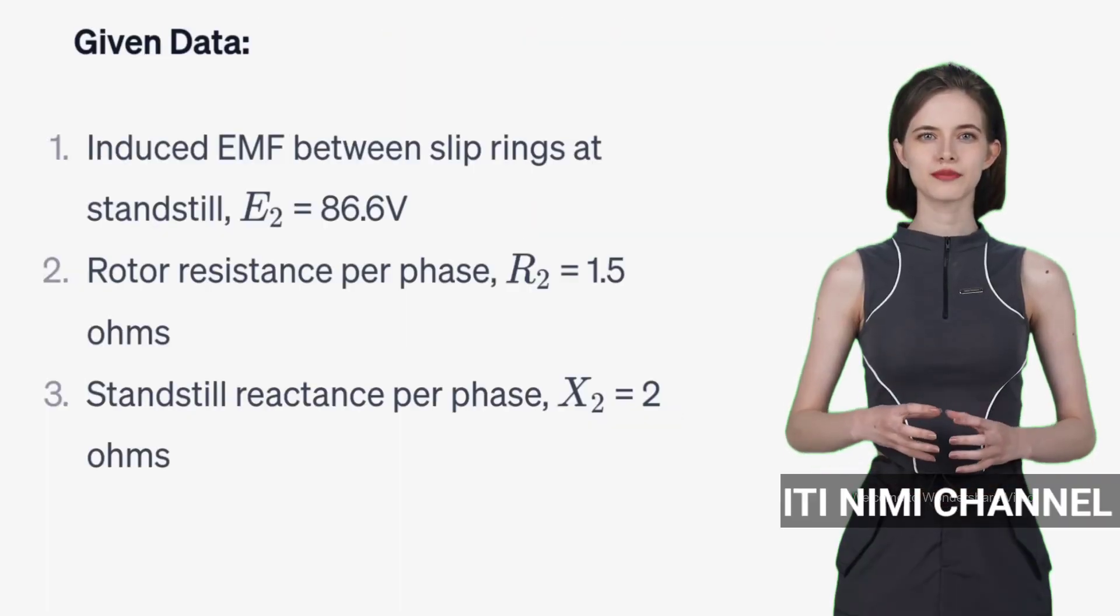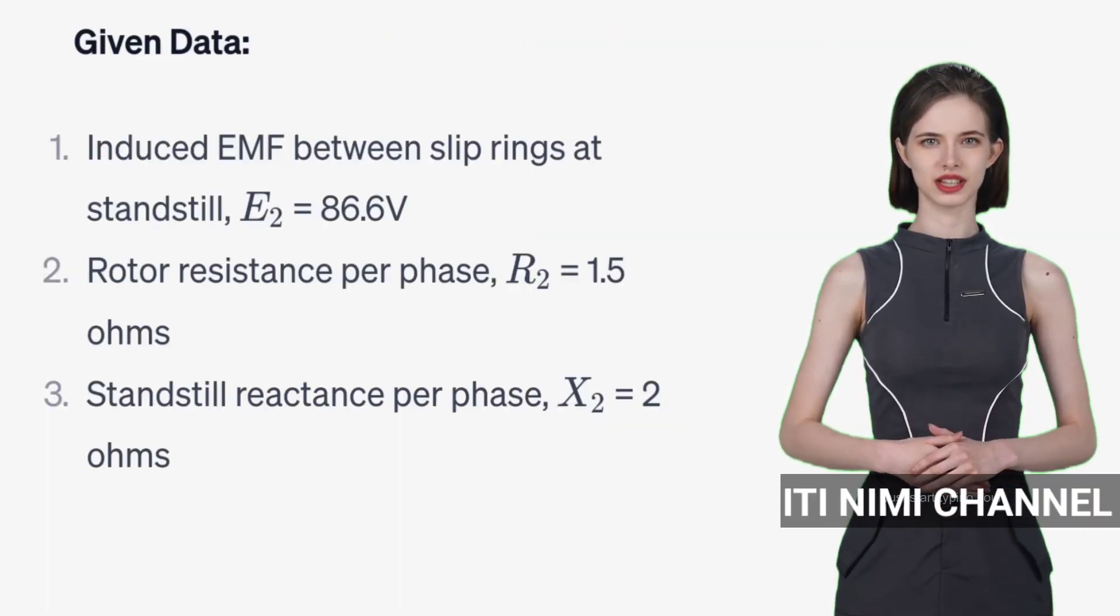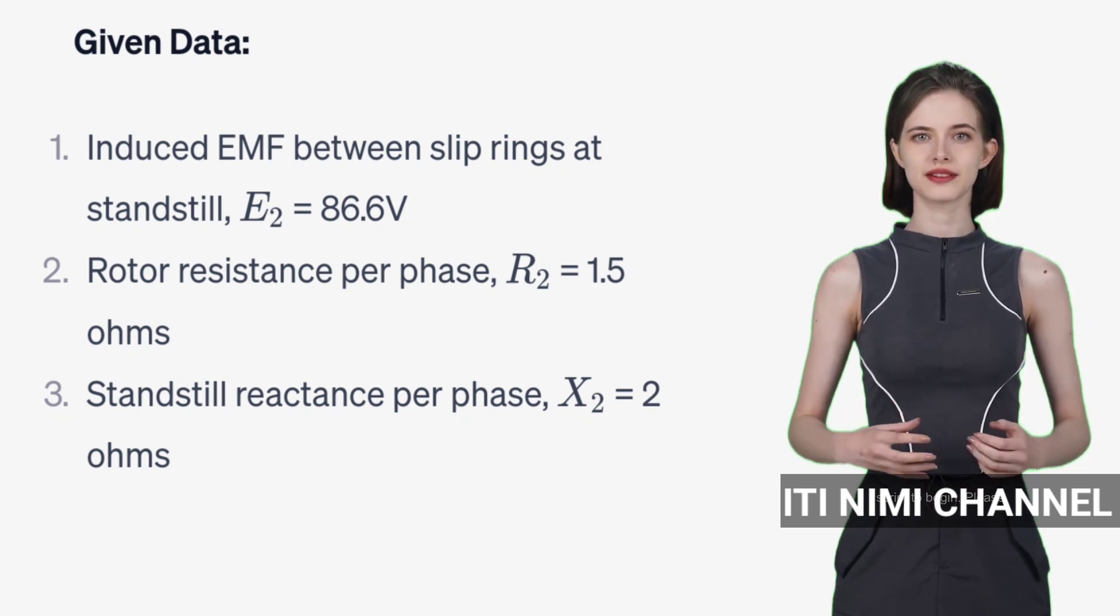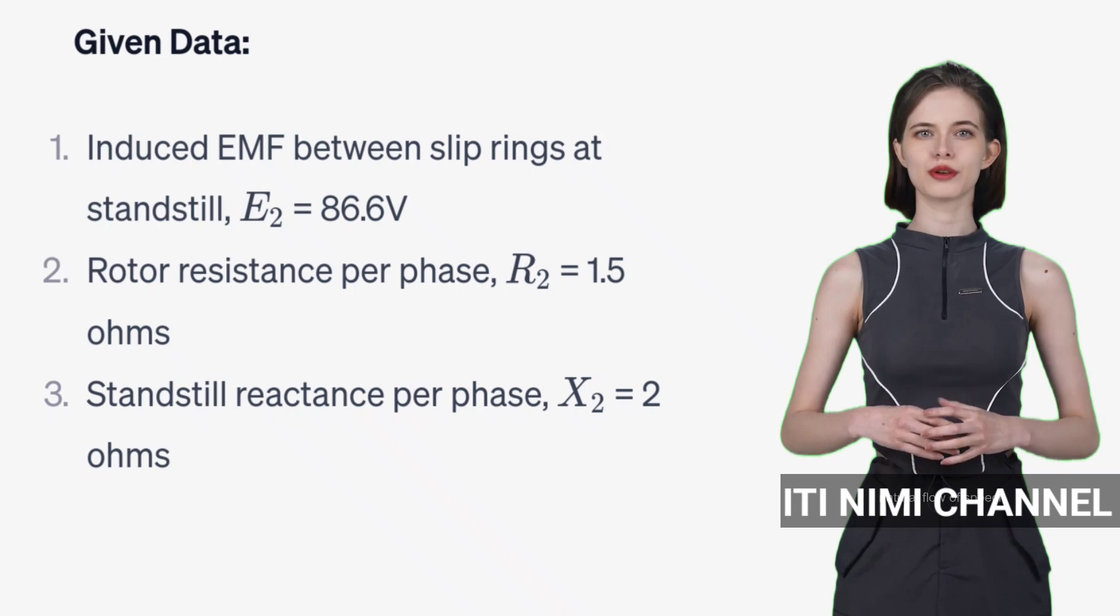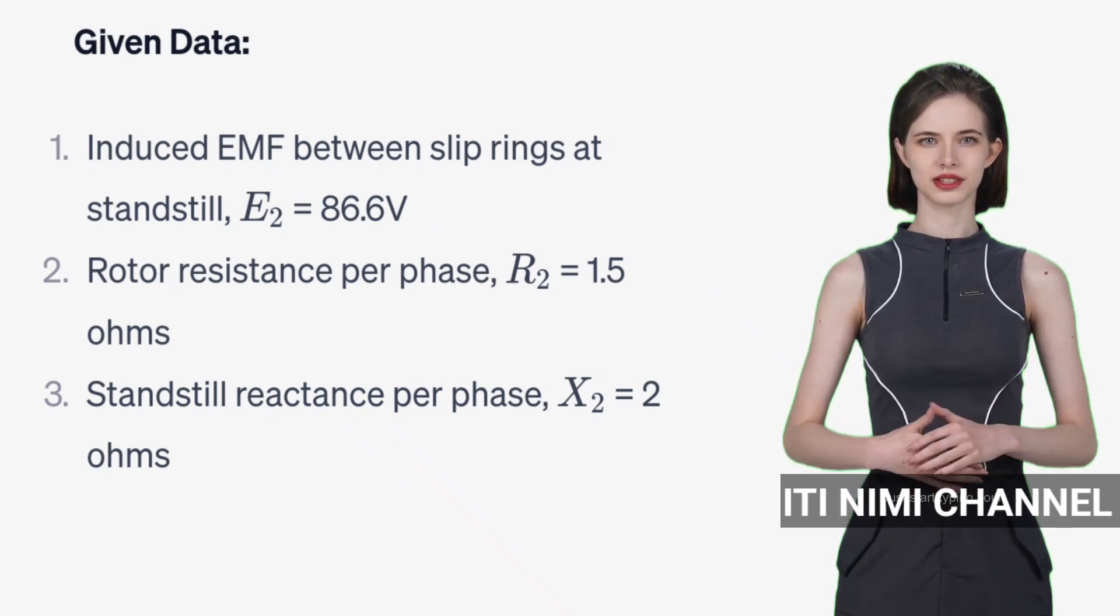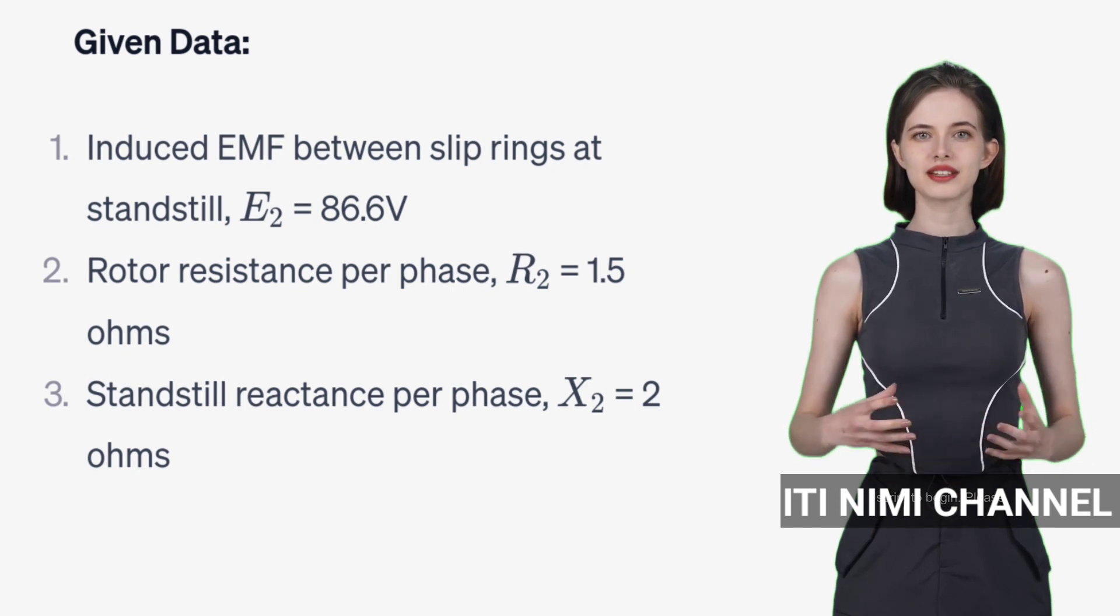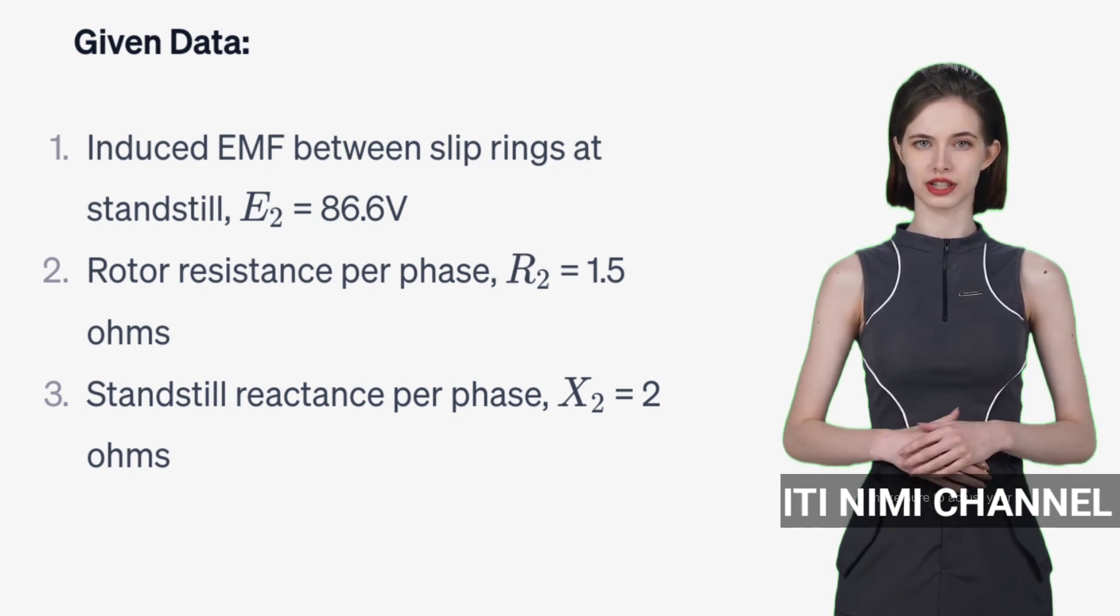Let's solve a problem related to a three-phase slip ring induction motor. We know the induced EMF between the slip rings at standstill is 86.6V. The rotor resistance per phase is 1.5 ohms and the standstill reactance per phase is 2 ohms.